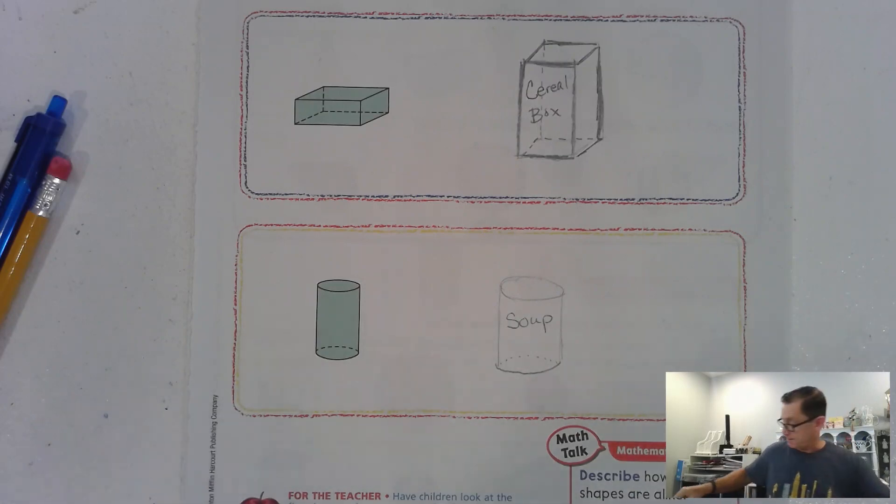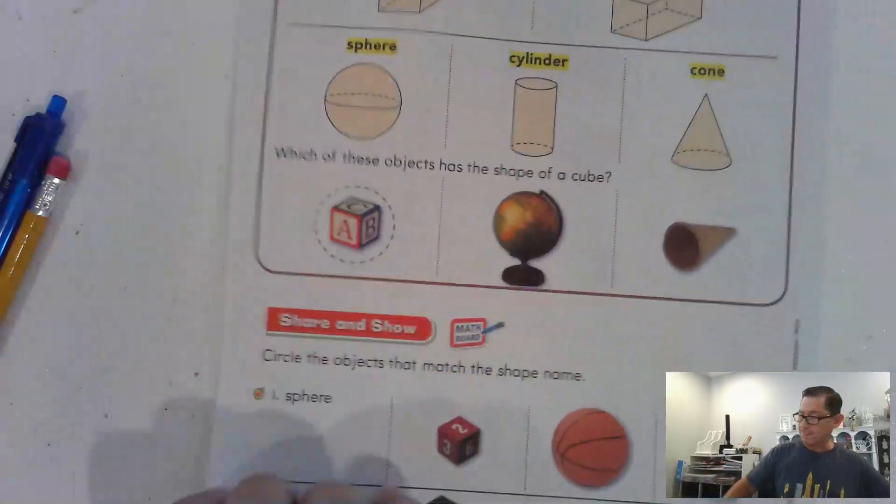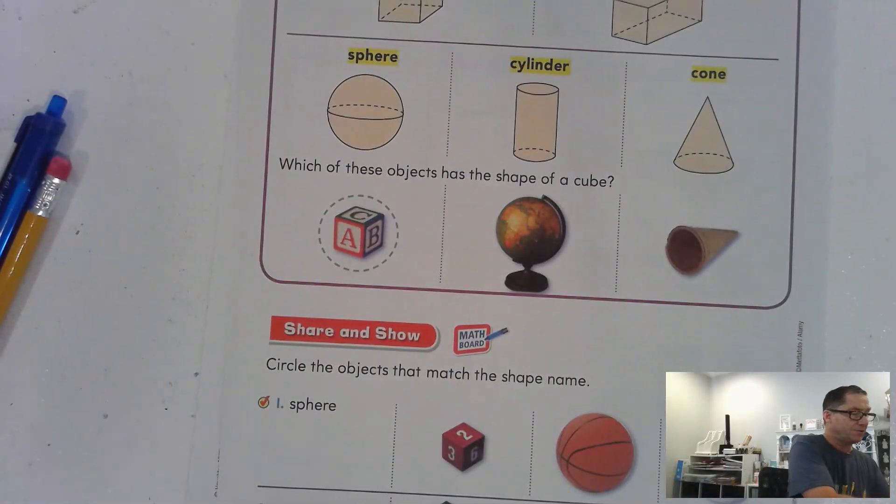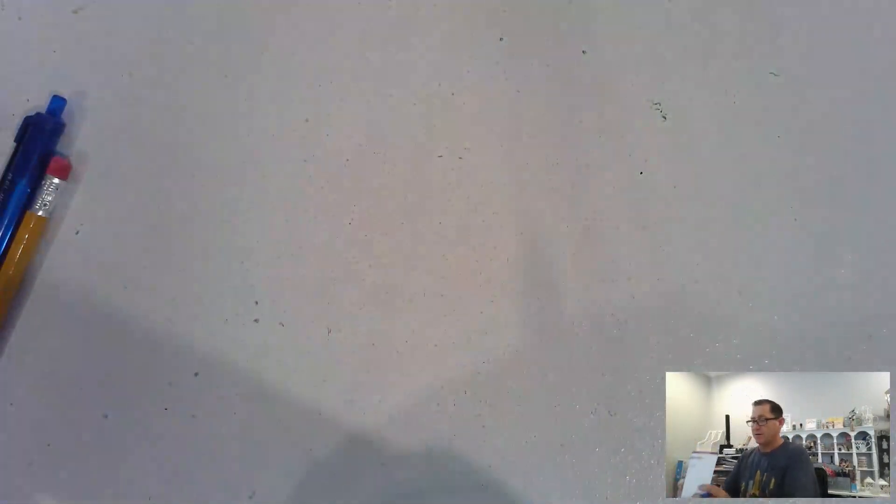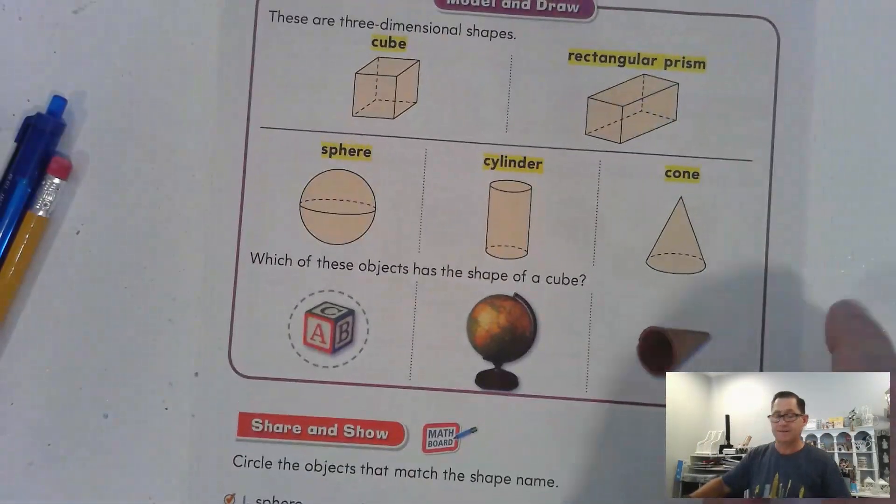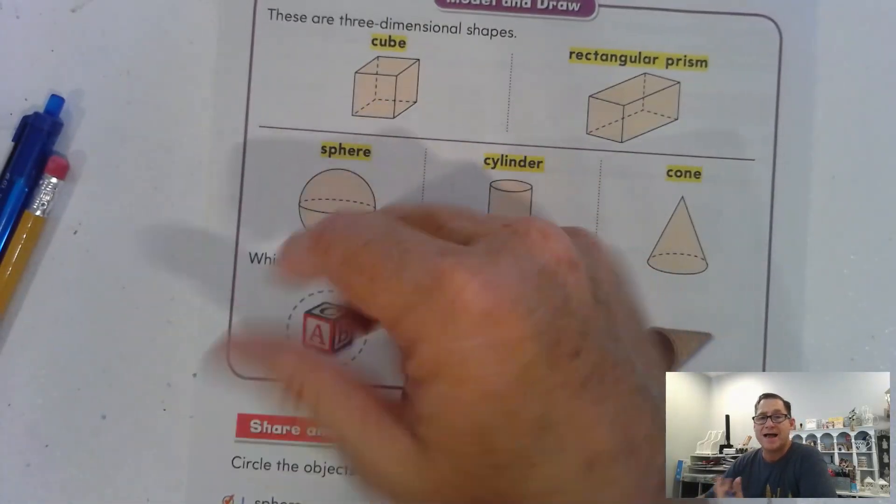Let's look at page 522. So these are three-dimensional shapes. So what does three-dimensional shapes mean? Well, it means that they have length, width, and they also have height.